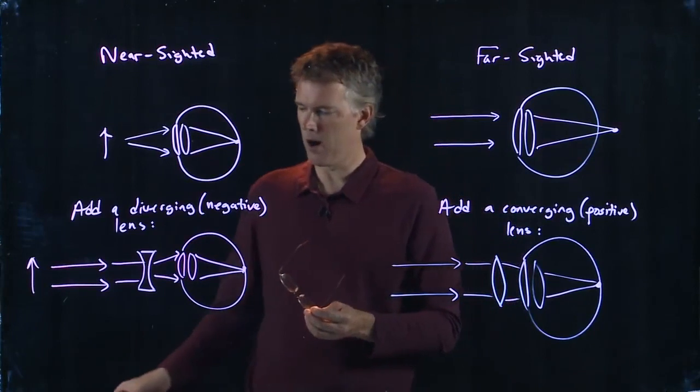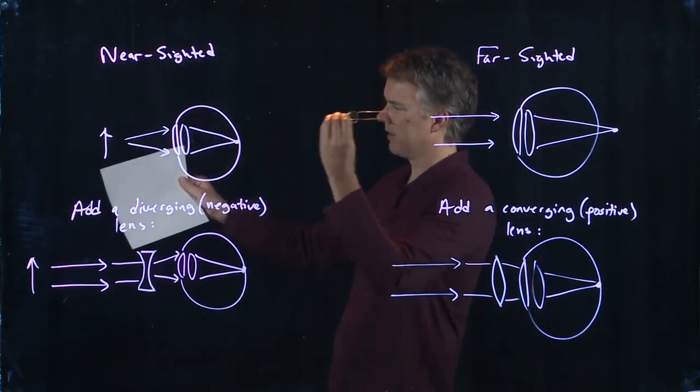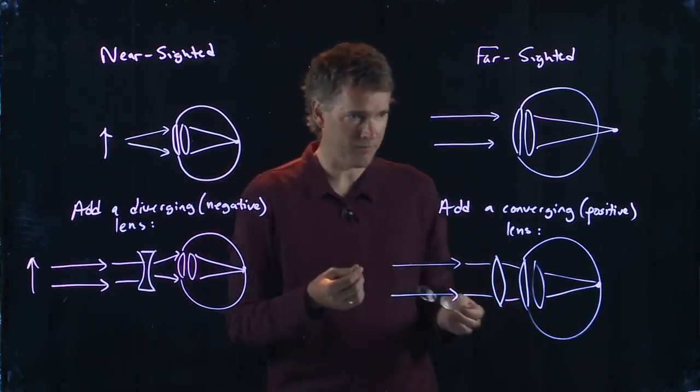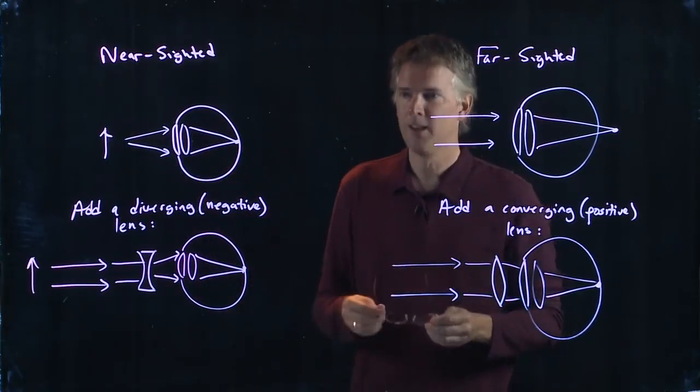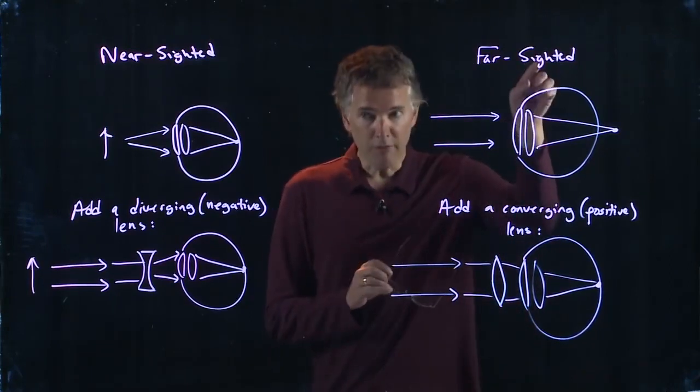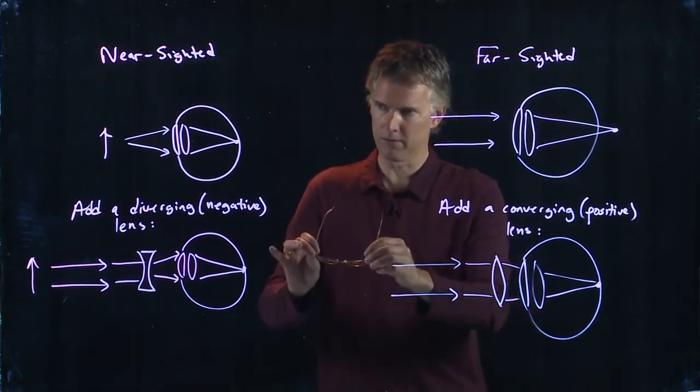So if you are out in the sunshine and you're trying to focus light to a point on a piece of paper because you're trying to start a fire because you're on a desert island, you had better hope that the person's glasses you're using, they're farsighted, positive lens. So you can focus that sunlight to a point.